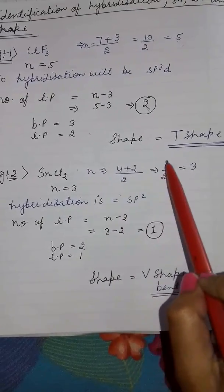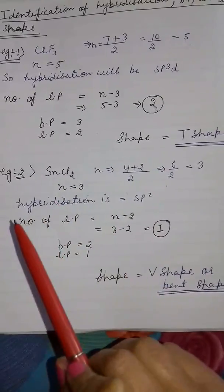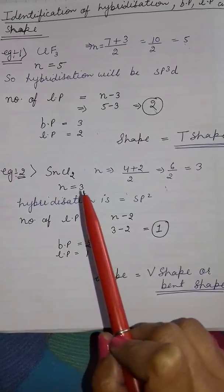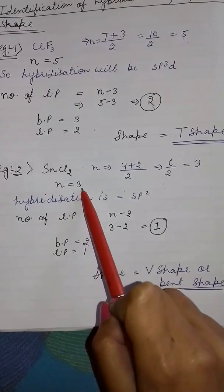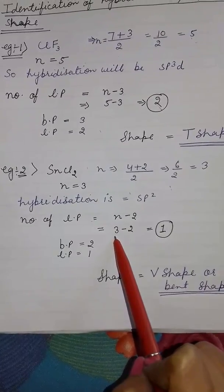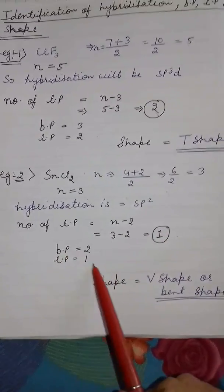Hybridization will be sp2. Number of lone pairs equals n equals 3, and number of chlorine is 2. So 3 minus 2 equals 1. Bond pairs are 2 and lone pair is 1.